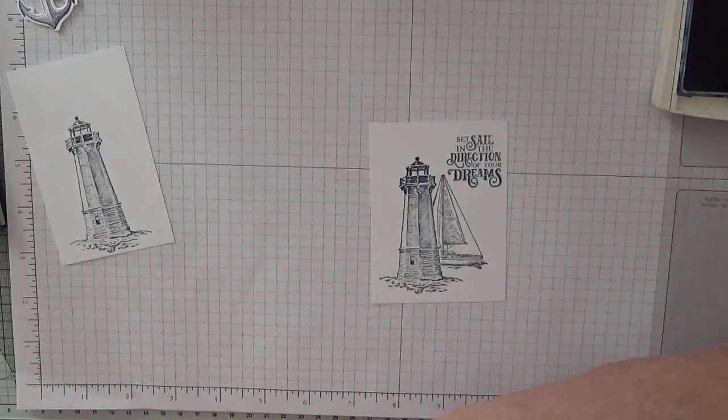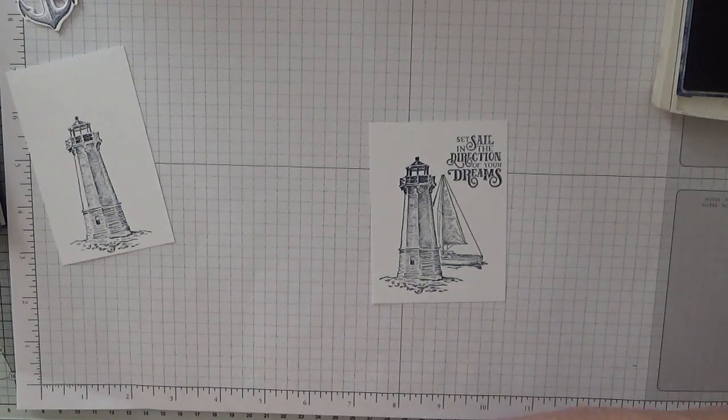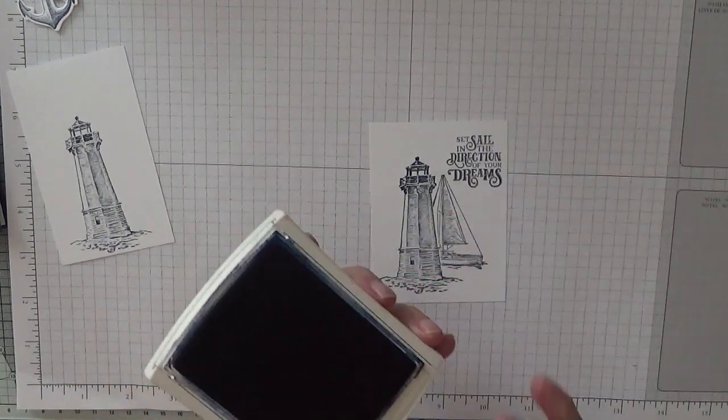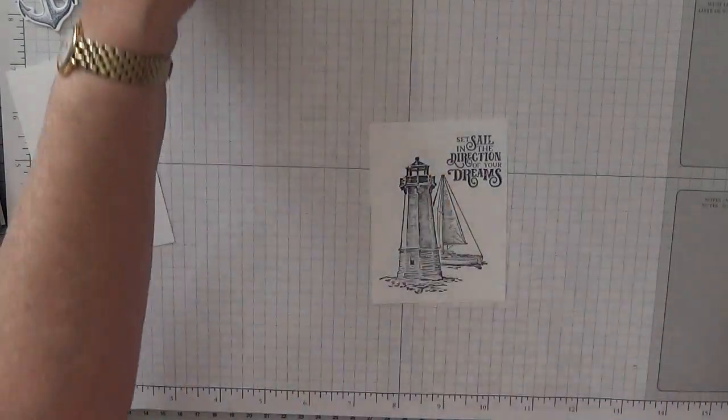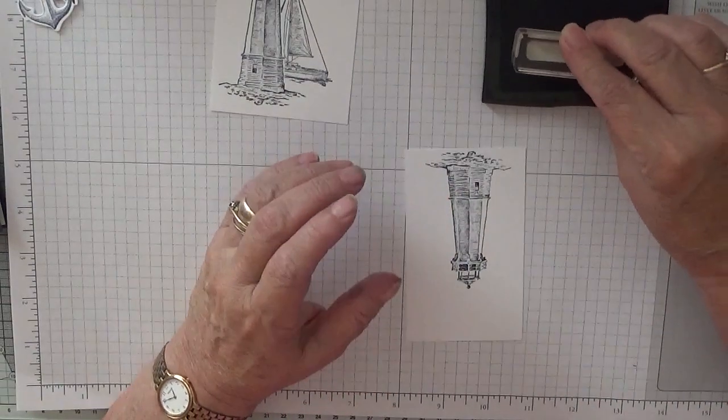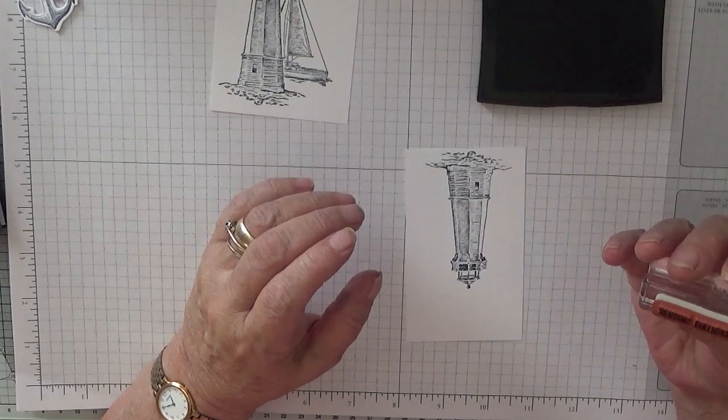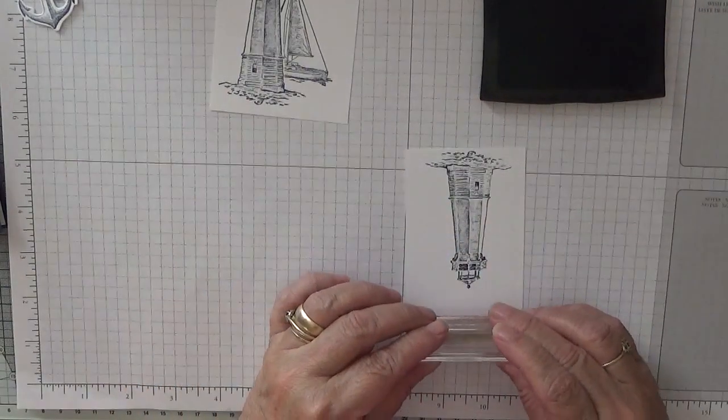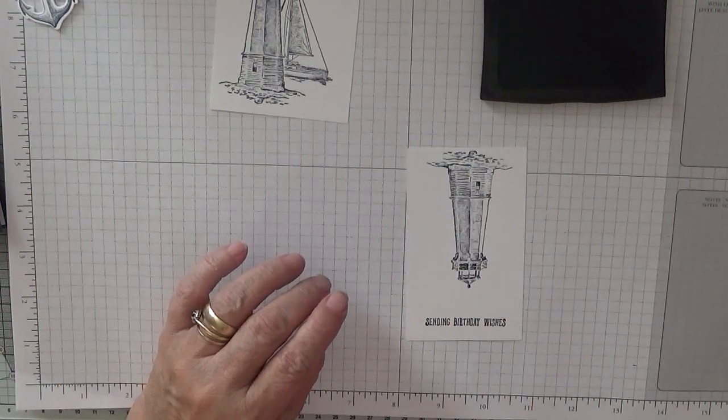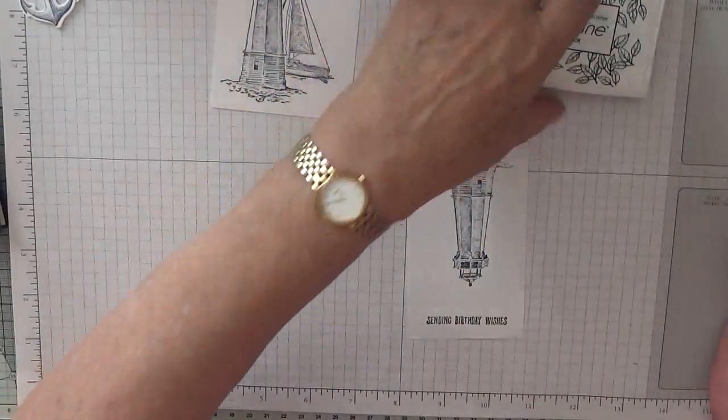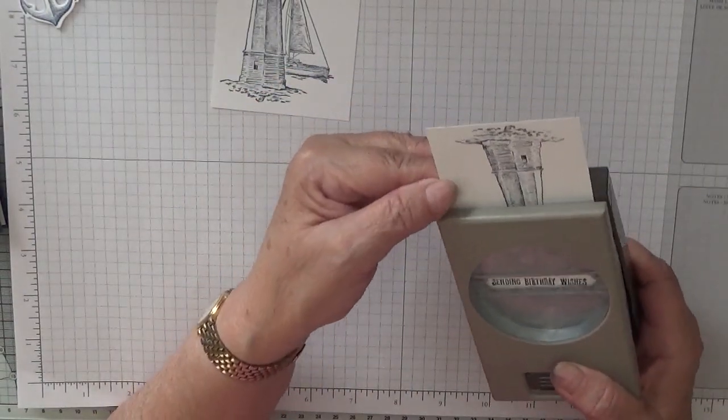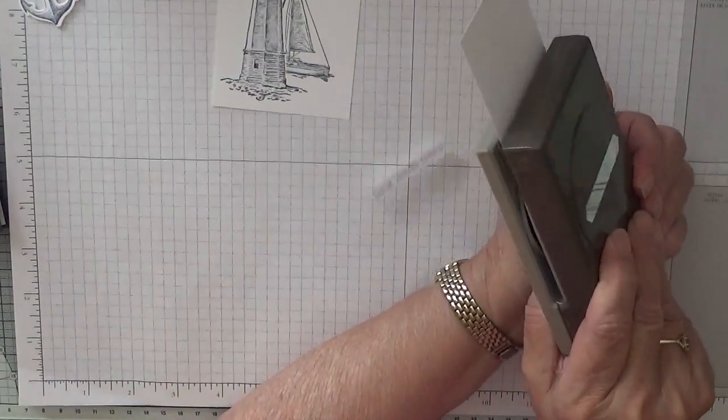And there we are and wipe that off. Right, that's all we need the blue for now. We need Versafine and we'll use this one and we'll use this bit and we're going to stamp Sending You Birthday Wishes. And we're just going to stamp that there and we're going to punch that out using the, I think it's called a Classic Label Punch. I keep using it and forget what it's called. So punch that out. That looks quite nice.